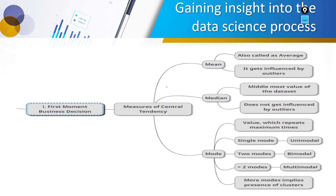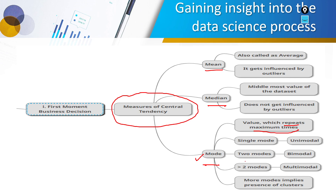The first moment business decision talks about the measure of central tendency: mean, median, and mode. When dealing with categorical data, we use mode — the value that occurs most frequently. Mode can be unimodal, bimodal, or multimodal. Mean is the average but is influenced by outliers. For example, in a third-year class where most students are aged 20–22, a student listed as age 38 would be an outlier.